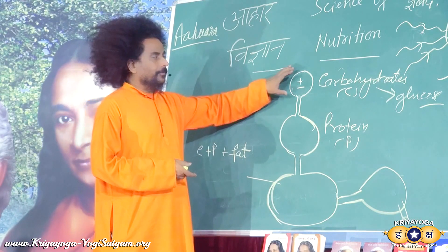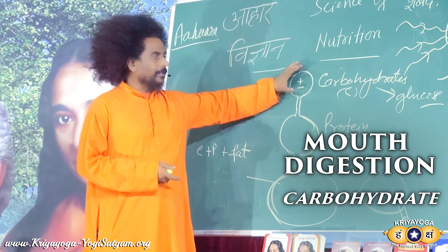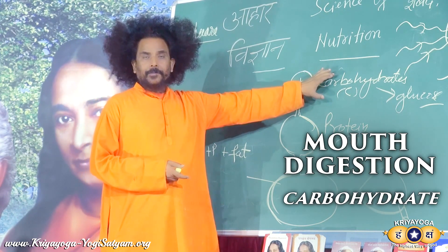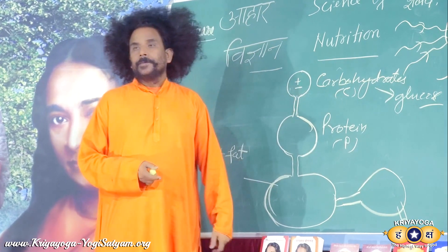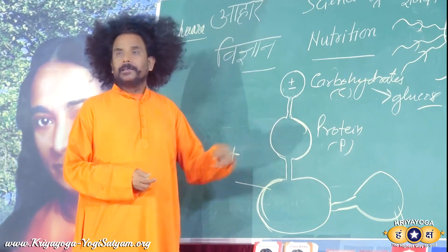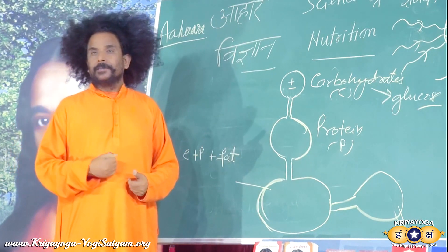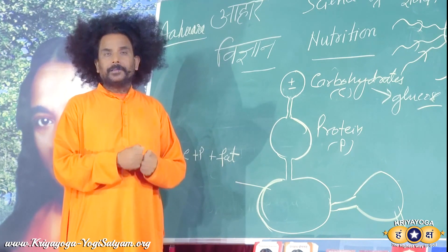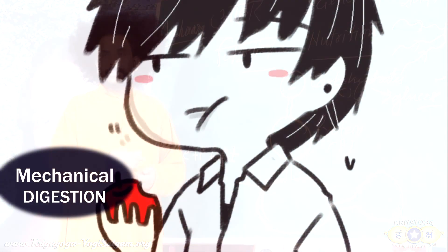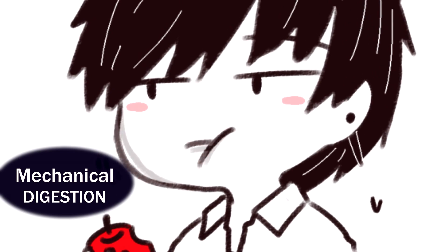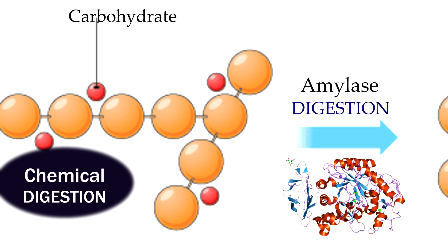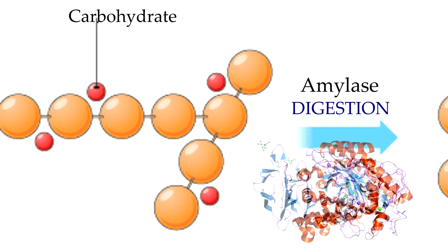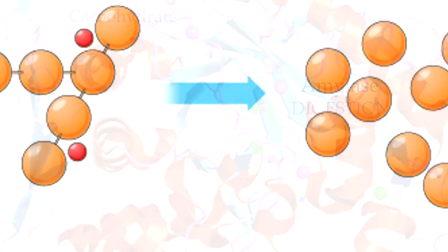Now, coming to the point — the first place is the mouth, where digestion of carbohydrate occurs. With the help of amylase, carbohydrate is transformed into glucose. There are two activities of digestion: one is mechanical, in which our teeth, gums, and jaws help in crushing the food into pieces. After that, chemical digestion happens, using the enzyme amylase.